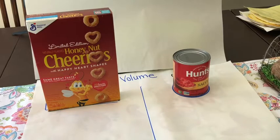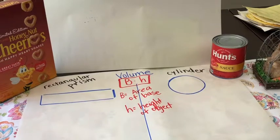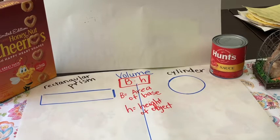Today we're going to be looking at finding the volume of two shapes. The shape on the left is a rectangular prism and on the right we have a cylinder. As you can see, I traced the bottom or the base of each of our objects to figure out the shape of the base. The base of a rectangular prism is a rectangle, and the base of a cylinder is a circle.